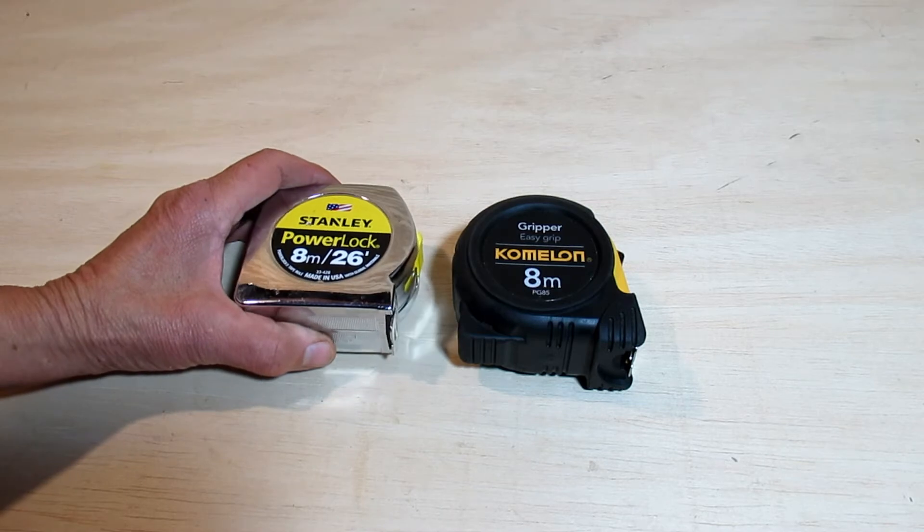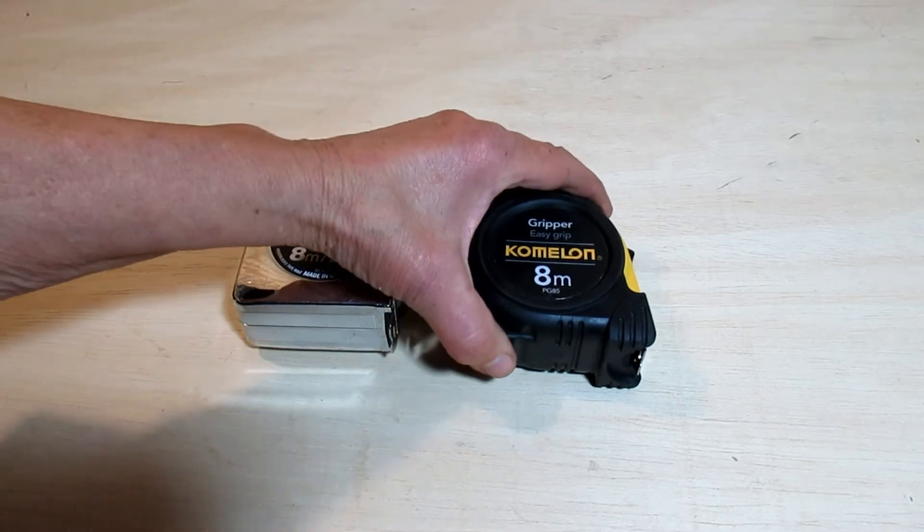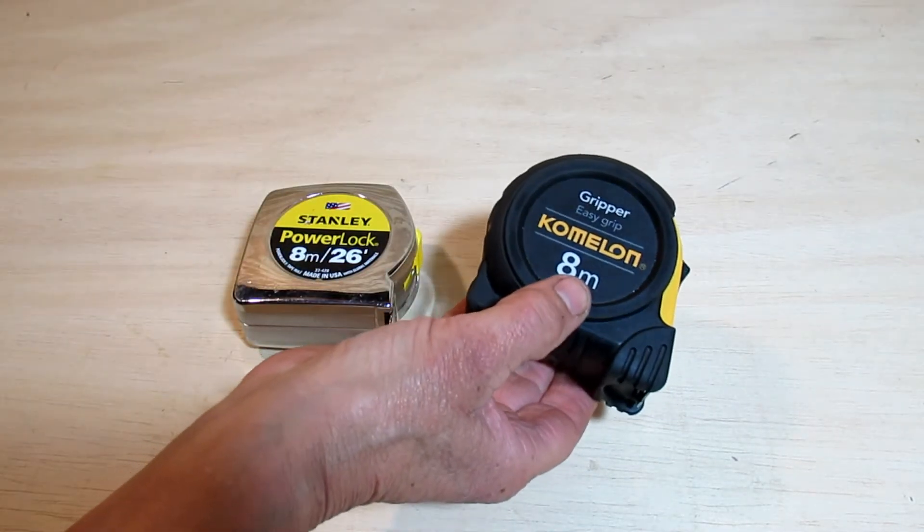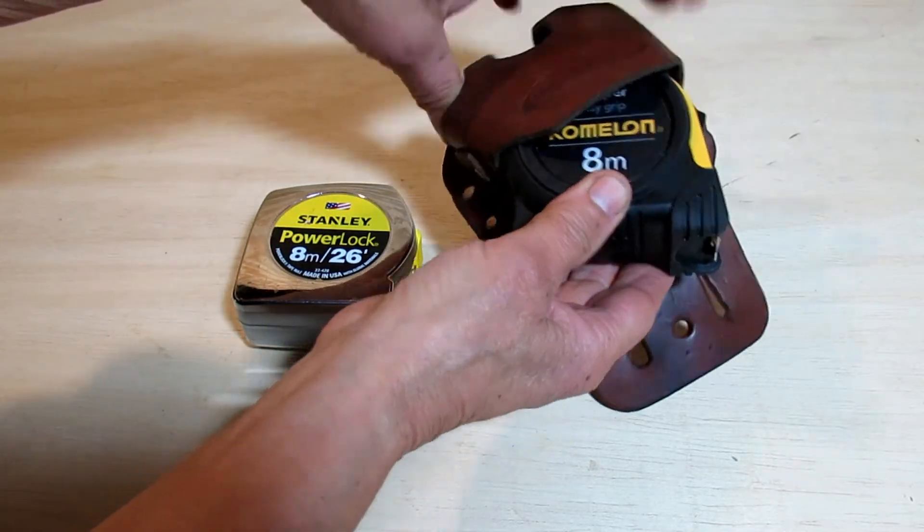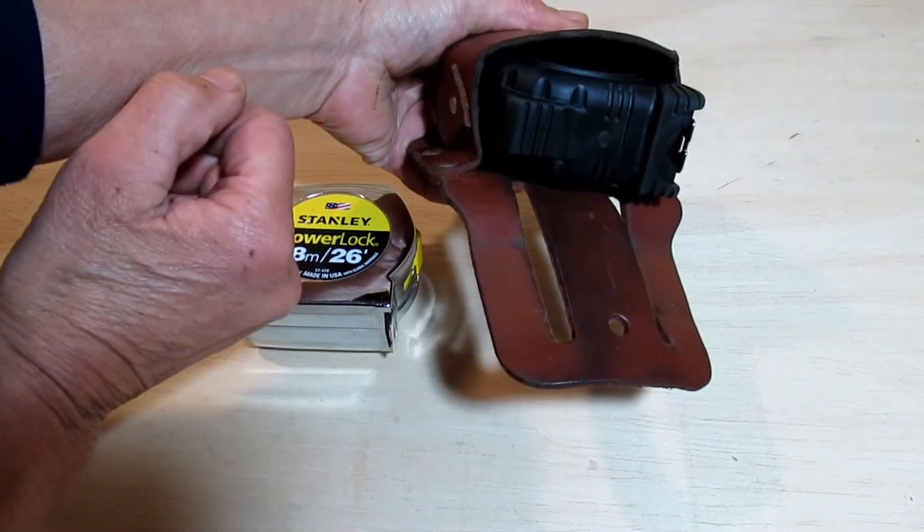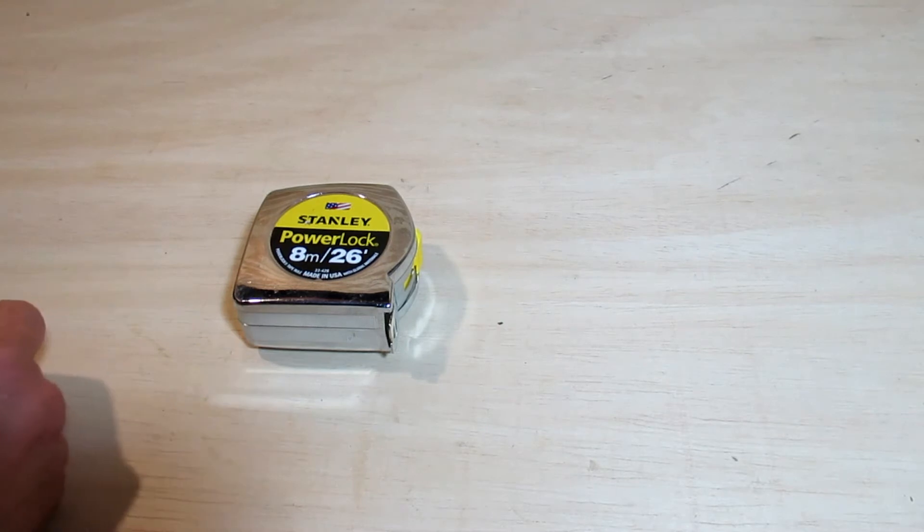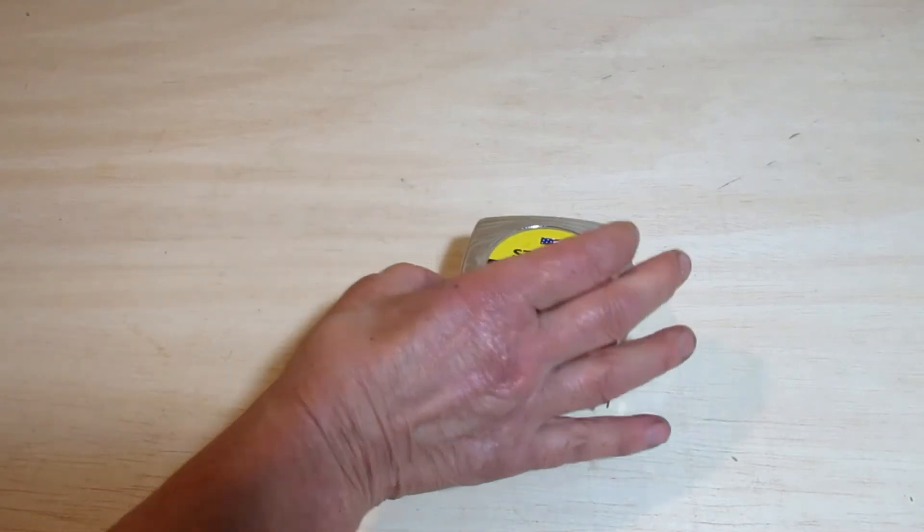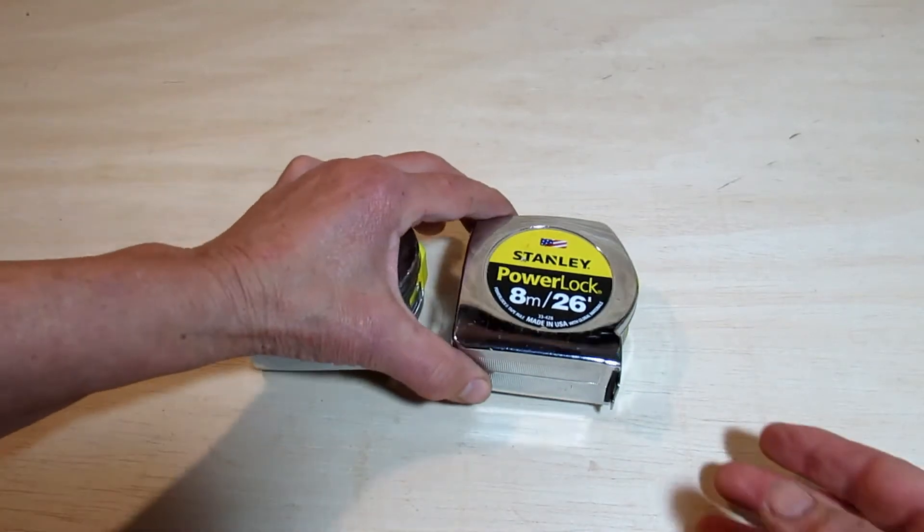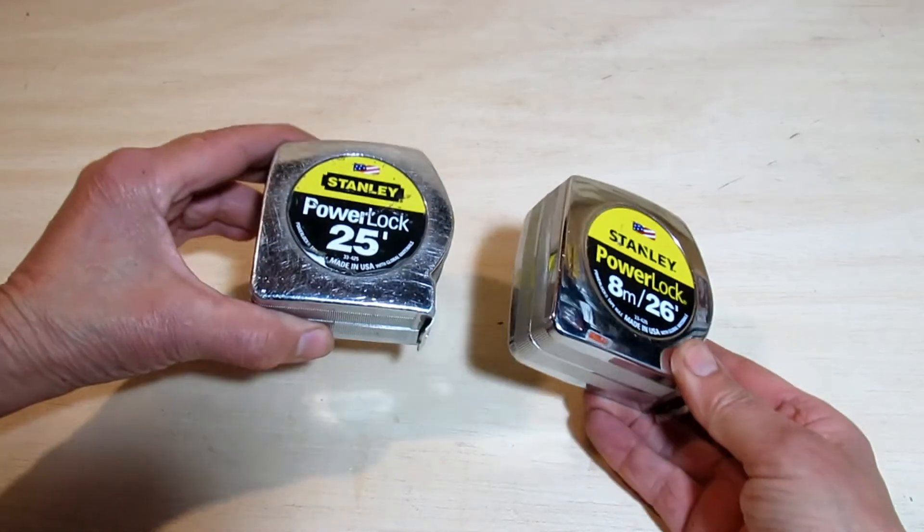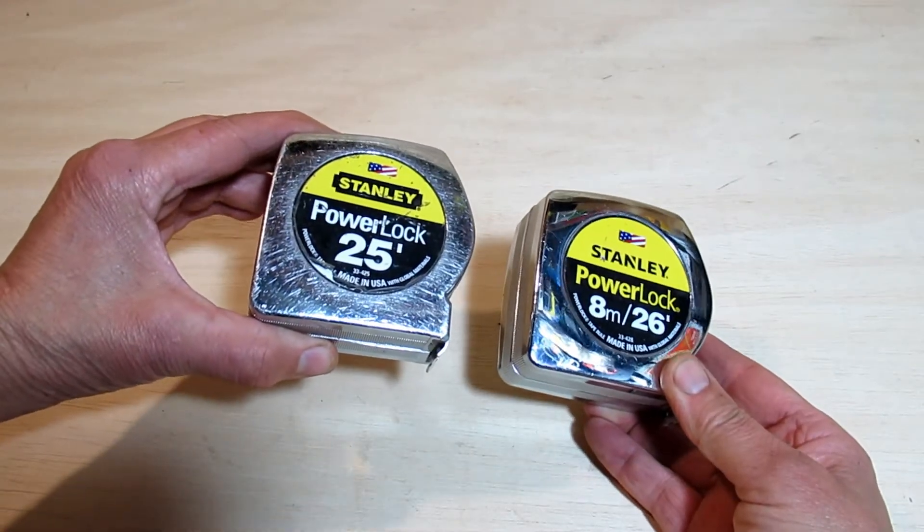This is a McGuire Nichols tape holder, and even though it's a little bit wide, it fits in there with no problem. So this is the 8-meter, 26-foot dual metric tape. It's about the same size as the old-school PowerLock.